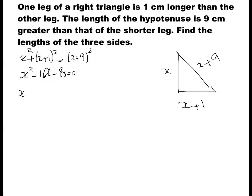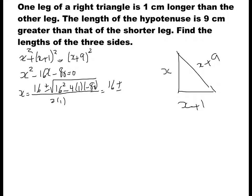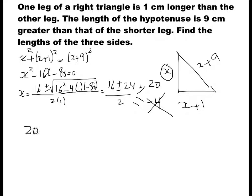Using the quadratic formula: x equals negative b — which is 16 — plus or minus the square root of 16 squared minus 4 times 1 times negative 80, divided by 2 times 1. Simplifying the square root gives 24. Going with addition and dividing by 2 gives x equals 20; going with subtraction gives x equals negative 4. Since x cannot be negative for a side length, x equals 20.